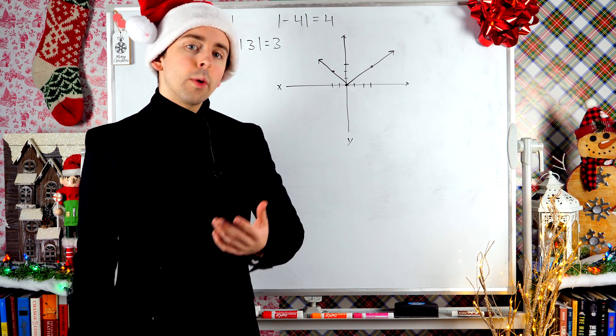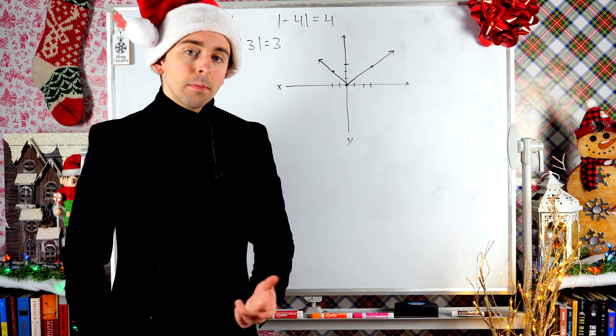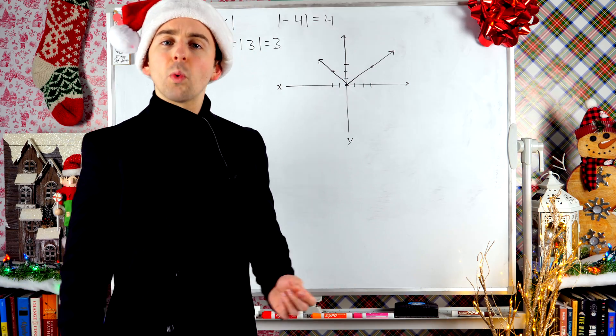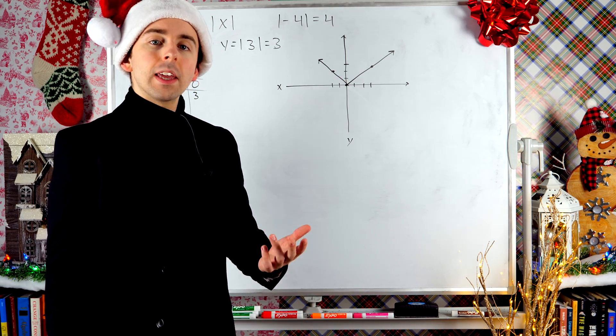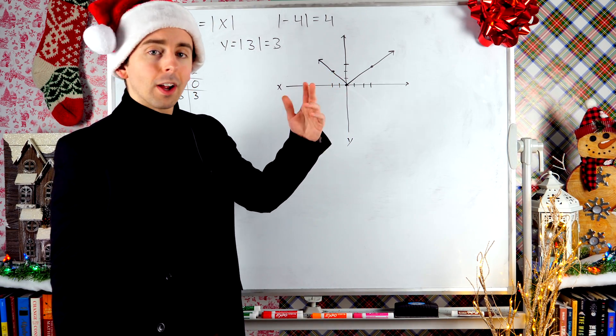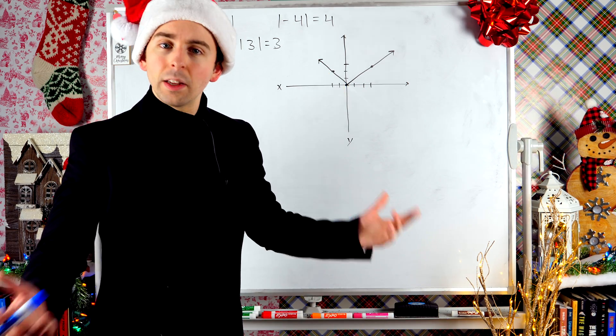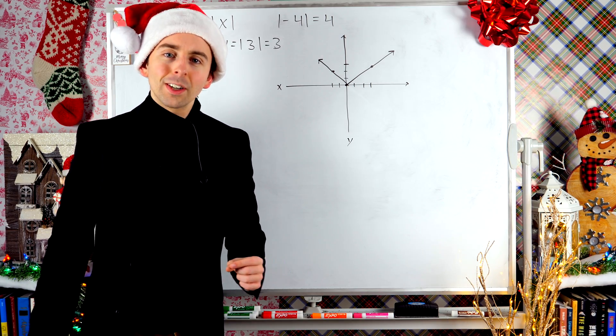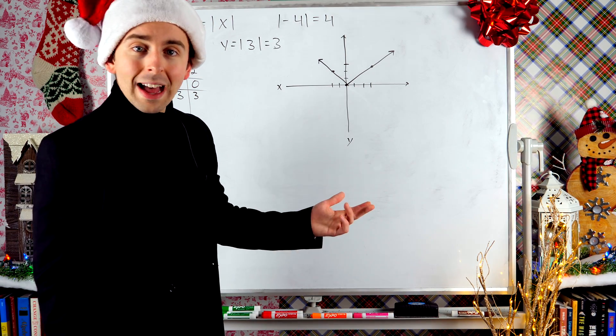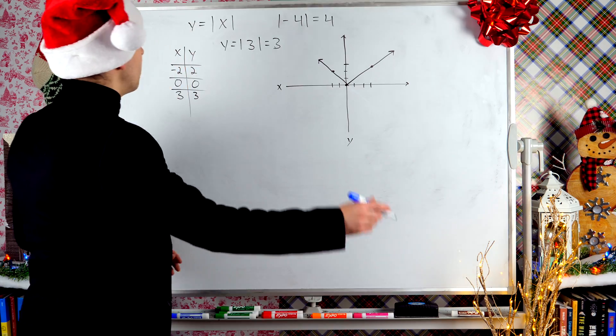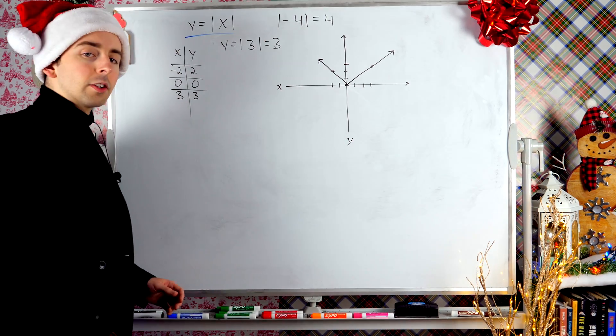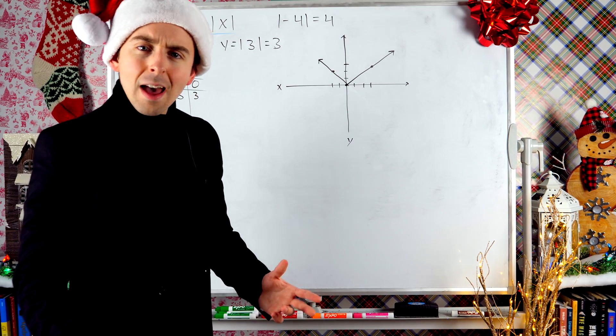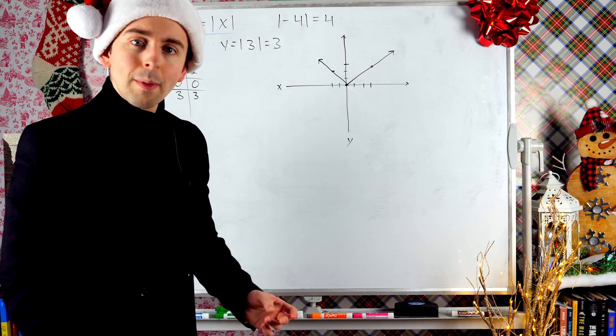Now you may recall when we were graphing lines, there are many different things that you could do to a line. You could change its y-intercept or maybe give it a smaller slope or a negative slope or a really big positive slope. There are a bunch of different lines that look a little different. Same sort of thing is true with absolute value. This is a graph of the basic absolute value function y equals absolute value of x.